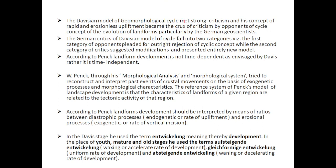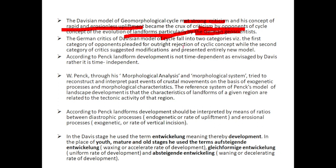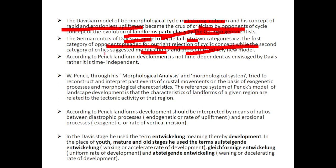The Davisian model of the geomorphological cycle met strong criticisms, and his concept of rapid and erosion-less upliftment became the crux of criticism by opponents — particularly German geoscientists. The German critics of the Davisian model fall into two categories: the first category pleaded for outright rejection of the cyclic concept, while the second category suggested modification and presented entirely new models. According to these critics, landform development is not time-dependent as envisaged by Davis; rather, it is time-independent.